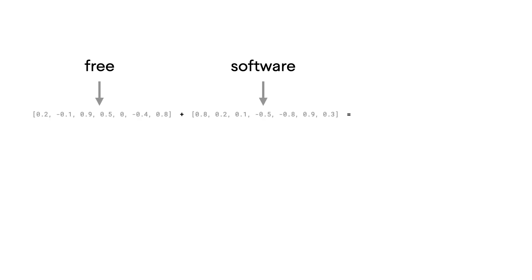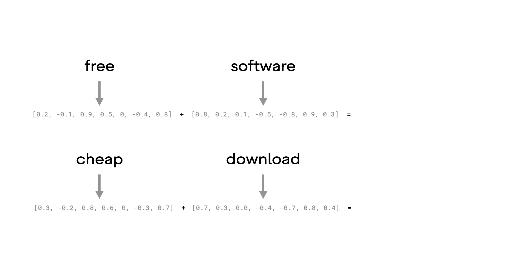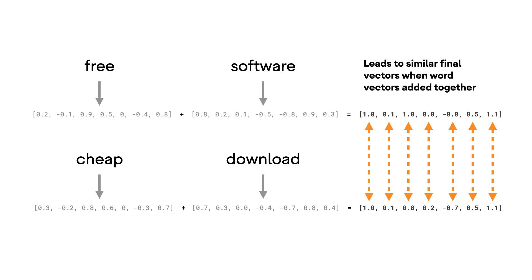There's actually a rule of thumb from research that the fourth root of the number of words works well here. So if you're using 2000 words in your dictionary, a good starting point would be seven dimensions to give enough ways to separate the words for future classification. So if we had a sentence like 'free software' and compared the resulting word vectors with a new sentence like 'cheap download', here 'free' and 'cheap' might have a similar vector encoding, and 'software' might have a similar encoding to 'download'. If we add the vectors for each given sentence, the overall vector representing each sentence ends up being roughly in the same location on a seven-dimensional graph, as shown by the totals. Now we have a way to represent similar sentences with similar vectors, and we can use those vector representations to train a custom machine learning model to classify a sentence as spam or not.